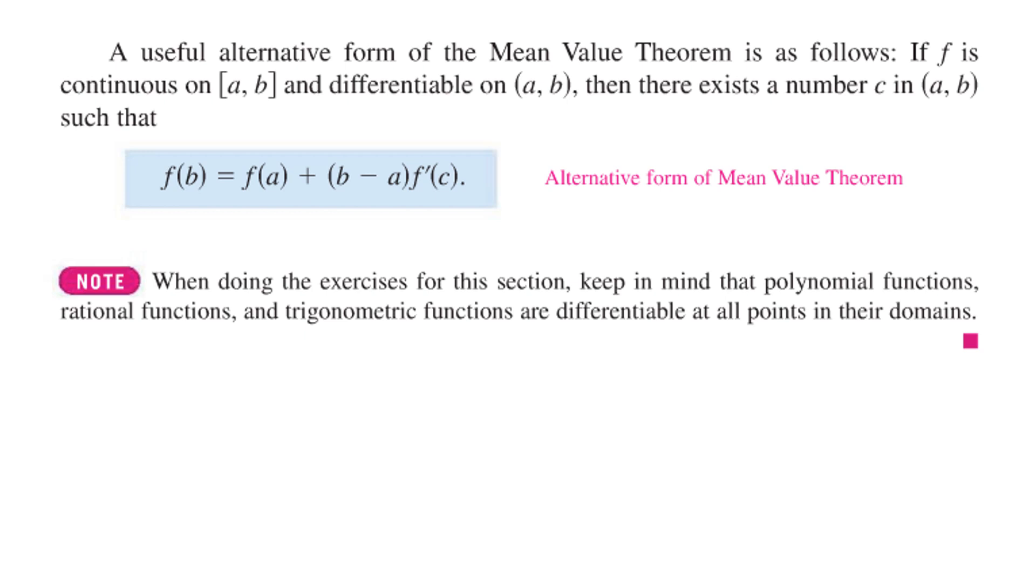A useful alternative form of the mean value theorem is given here. So if f is continuous on the closed interval a b and differentiable on the open interval a b then there exists a number c in a b such that and this is just solving the mean value theorem a little bit differently and they call it alternative form of the mean value theorem. And keep in mind that polynomial functions, rational functions, and trig functions are differentiable at all points within their domains and so those mean you can often apply the mean value theorem to those.